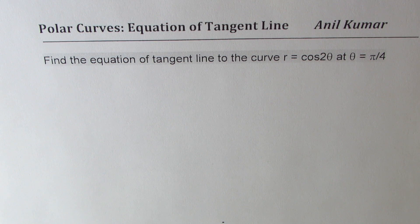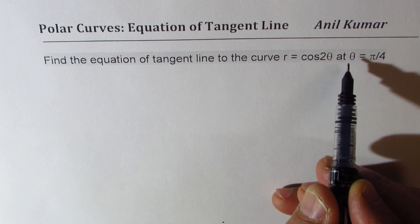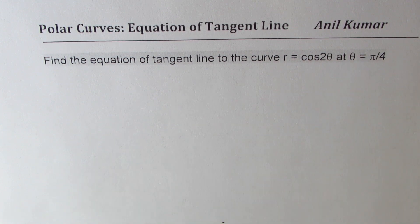Now we will discuss how to find equation of tangent lines. The question here is find the equation of tangent line to the curve r equals cos 2 theta at theta equals pi by 4.